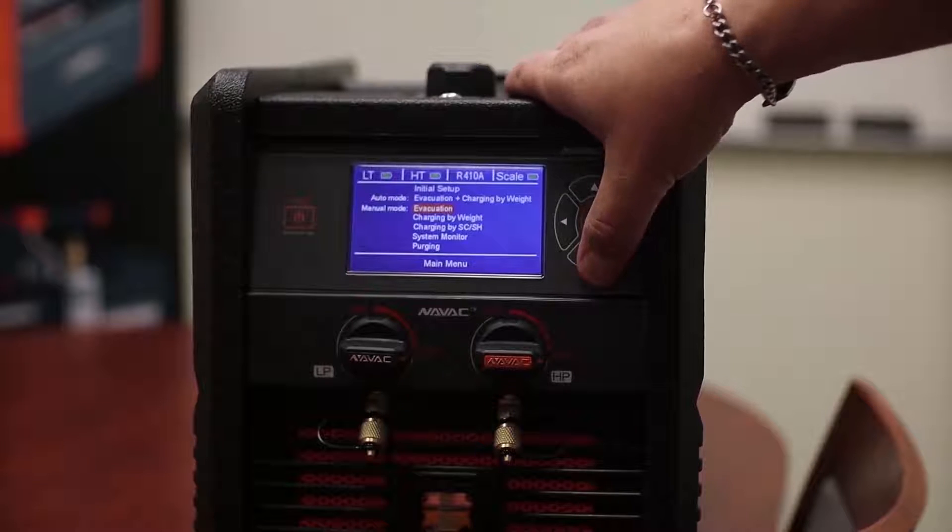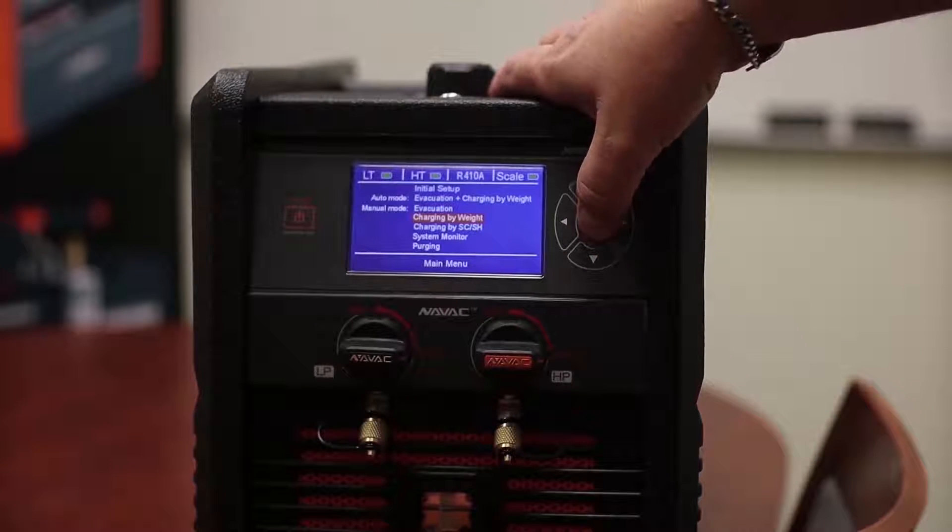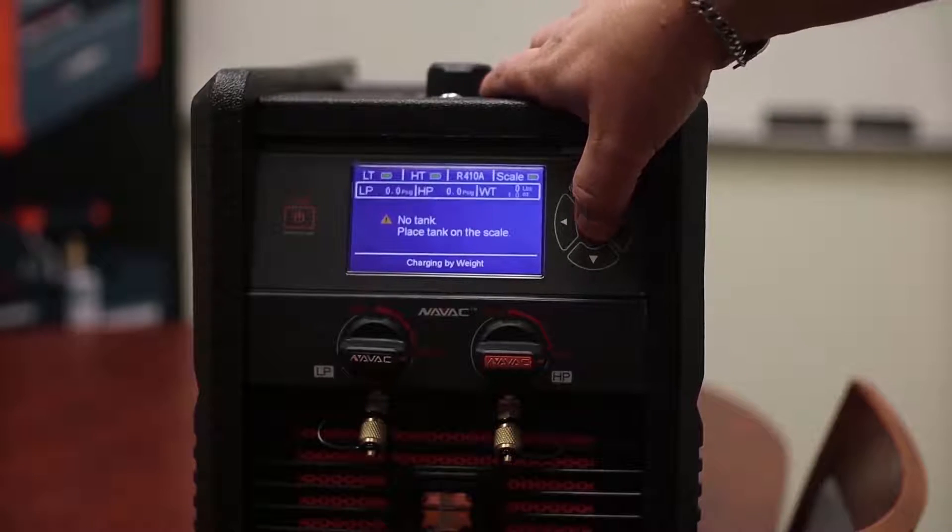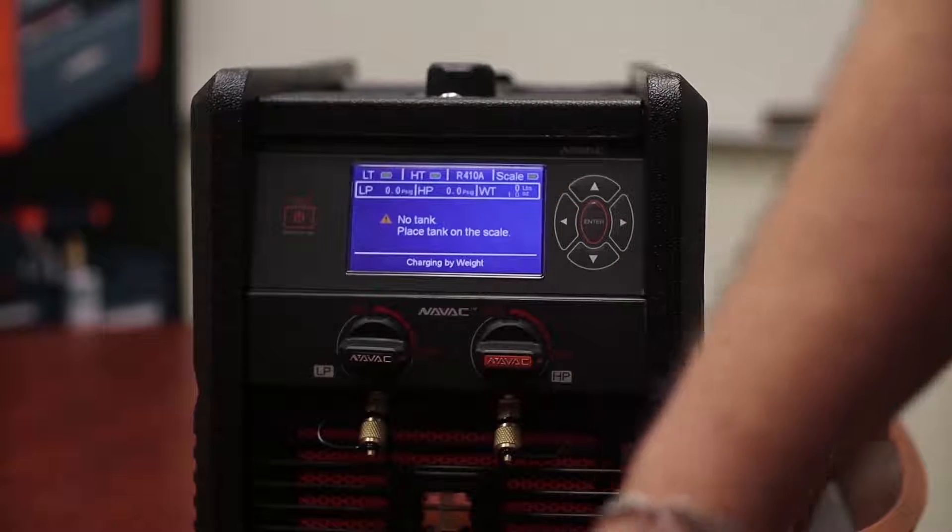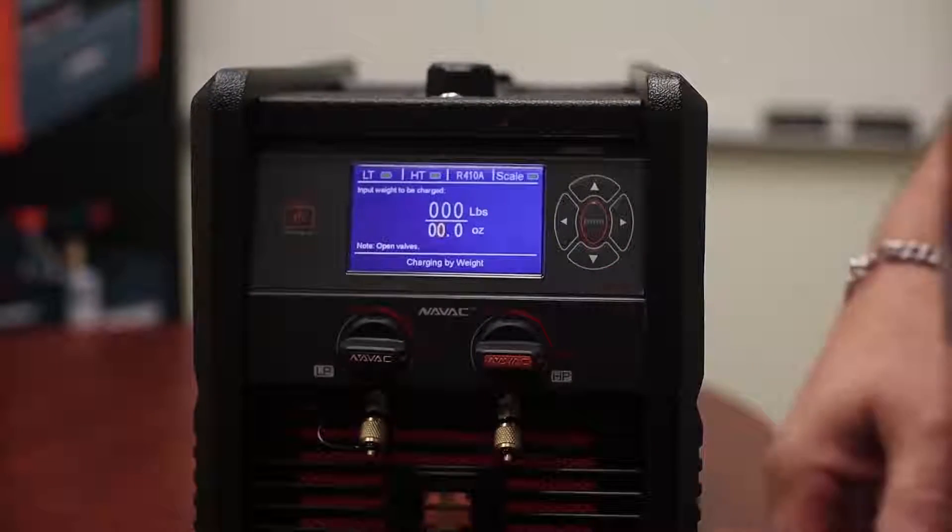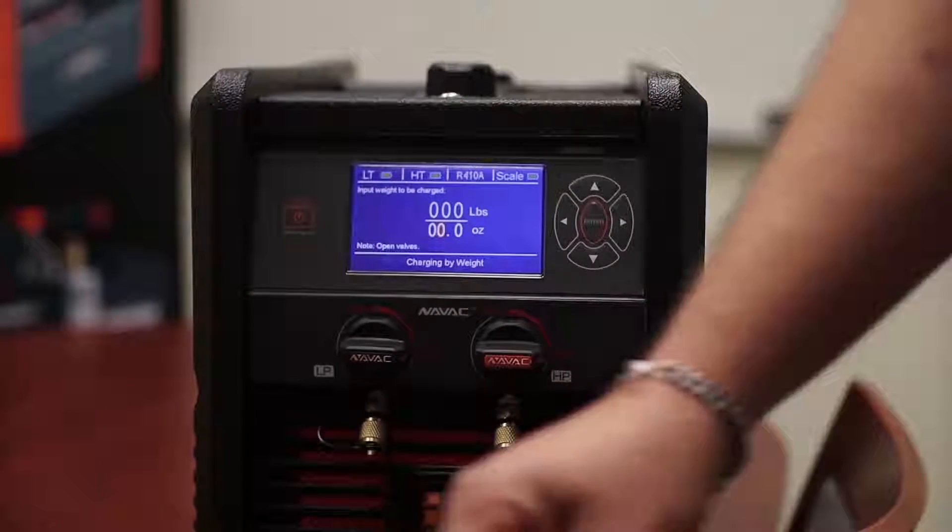Alright, so we've done our evacuation. We can do a charge by weight. If we do a charge by weight, it's telling us that we don't have a tank on the scale. It knows that we're not hooked up. So in this case, we would do it and put our tank on the scale.